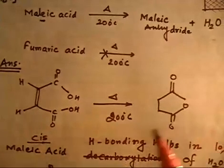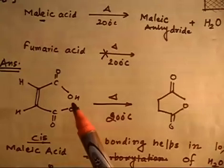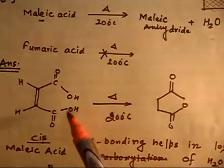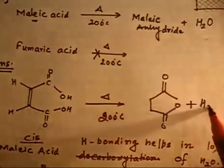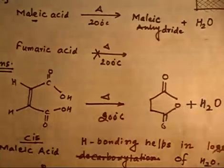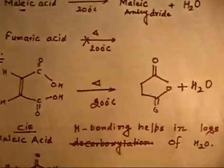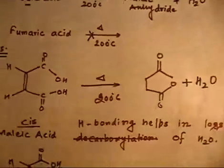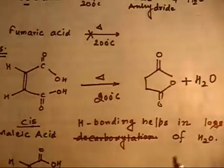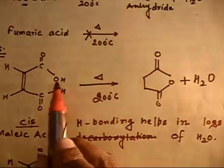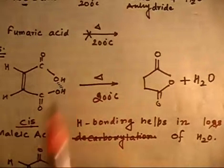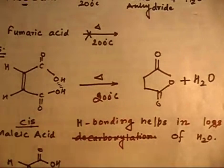So if you heat and one H₂O molecule goes out, this easily happens because hydrogen bonding helps in the loss of H₂O. Hydrogen bonding is there between oxygen and hydrogen, and this hydrogen bonding helps in the loss of the water molecule.